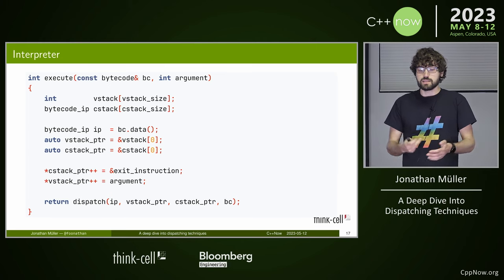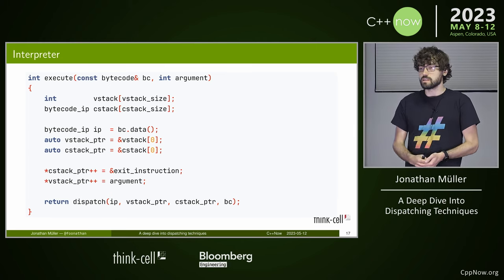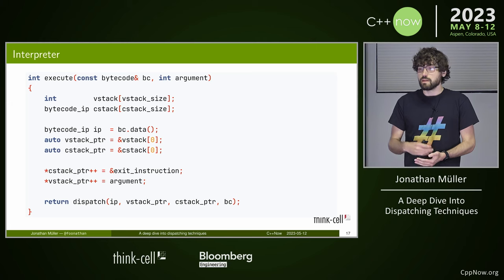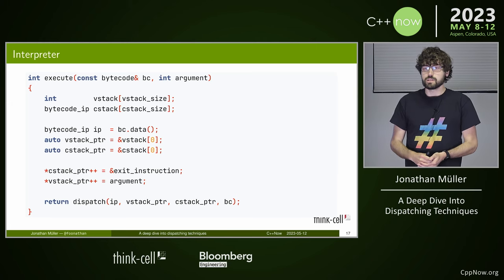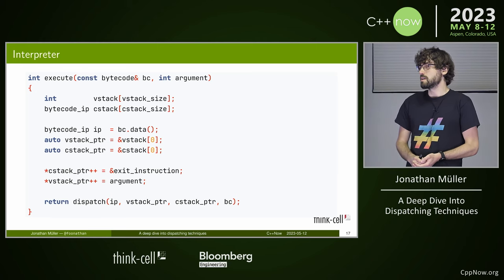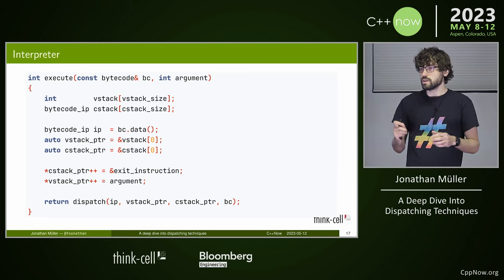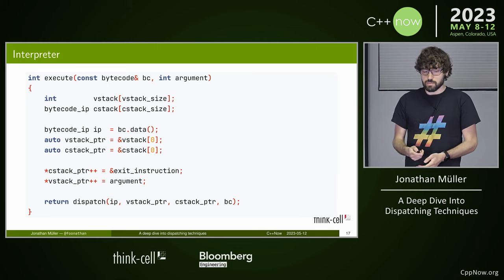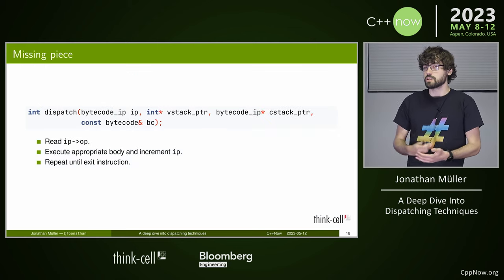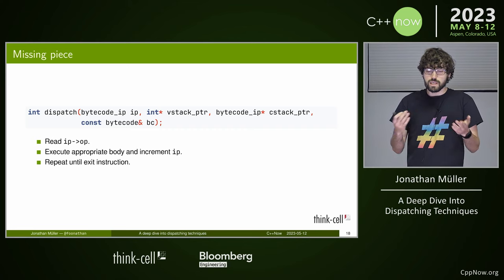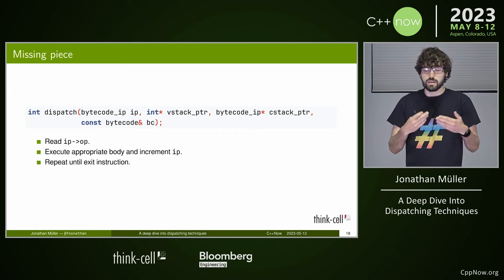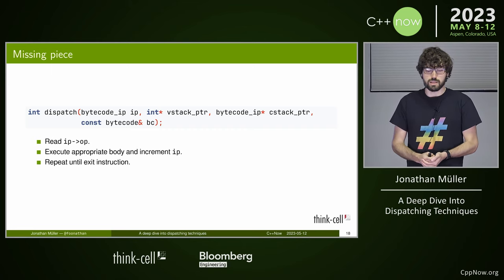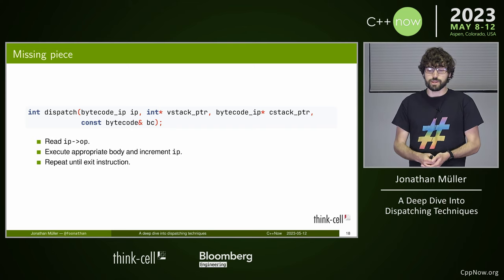The entry point for our interpreter takes the bytecode and the single argument to our function. It creates a VStack and CStack as arrays of some size, initializes the instruction pointer and VStack pointer, pushes the argument onto the VStack, and also pushes a special exit instruction onto the call stack so that the return of the first function goes to the exit instruction, which we detect and use to exit the interpreter. Then we call dispatch.